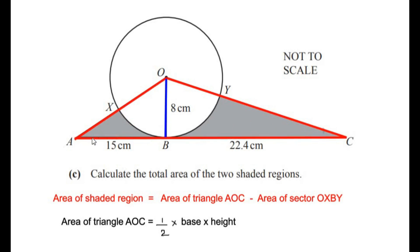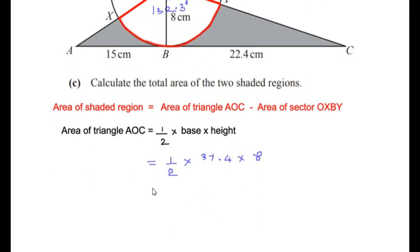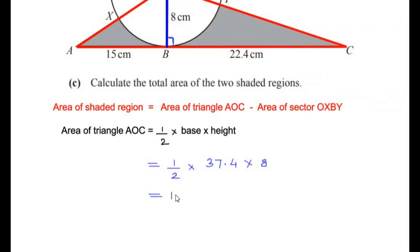In triangle AOC, the base is AC and the height is OB, since OB is the perpendicular height. Substituting values: (1/2) × 37.4 × 8 — the total length of AC is 37.4 centimeters and OB is 8 centimeters — this gives us 149.6 centimeters squared. So the area of triangle AOC is 149.6 cm².